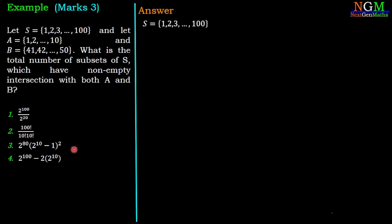Here in the question, we have given three sets: S, A, and B. S contains 1 to 100 elements, A contains 1 to 10, and B contains 41 to 50. Note that A intersection B is the empty set.